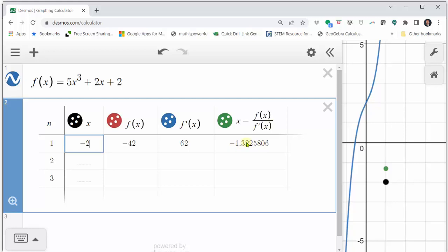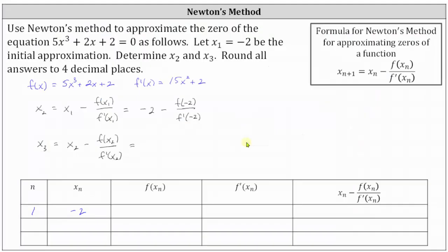This value is x two. Let's go back and record this in our table. Going to the next row where n is equal to two, we know x two is negative 1.3226. Let's also record x two above — we now know this is approximately negative 1.3226.